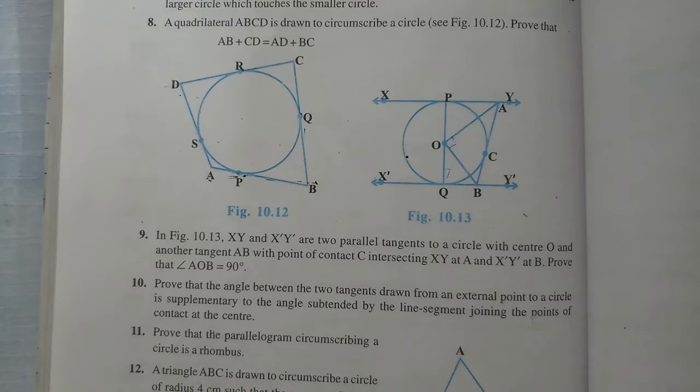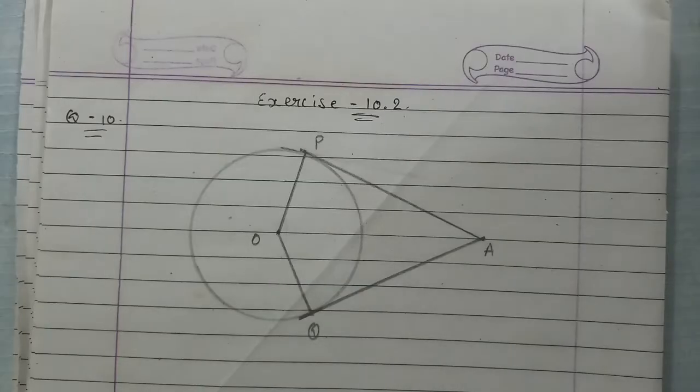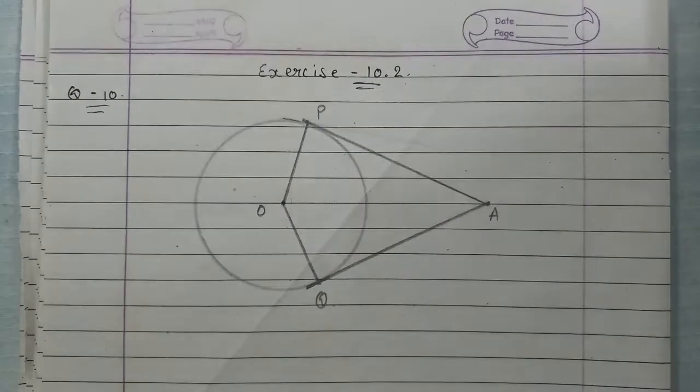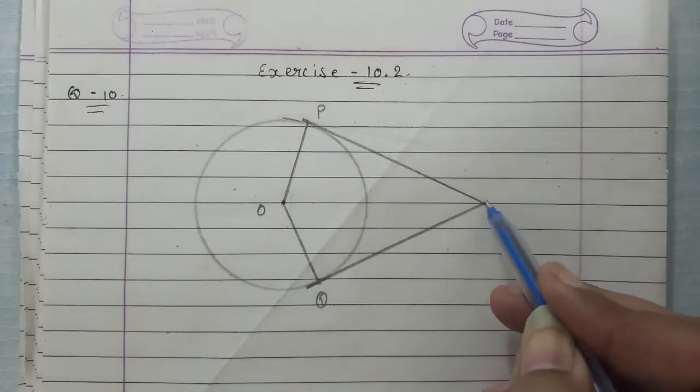Let's try to understand this through a figure. First of all, there is a circle with center O. We have two tangents drawn from an external point A.